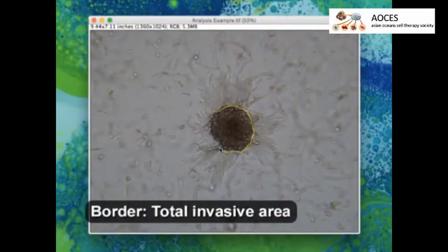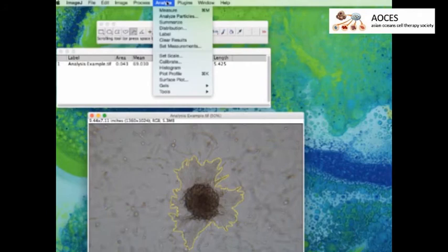To determine the invasive area of the spheroid, use the Freehand Draw tool to trace the border of the spheroid and then the area of invasive cells. Again, click Analyze in the top menu, followed by Measure to display the area measurement.